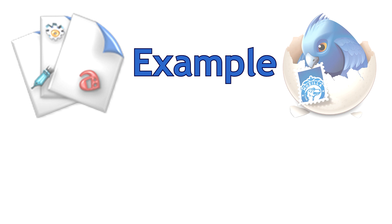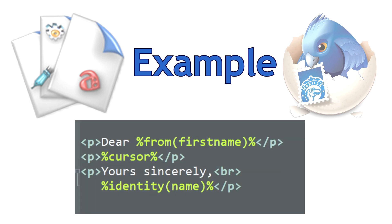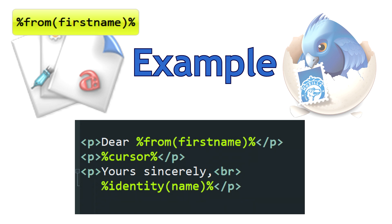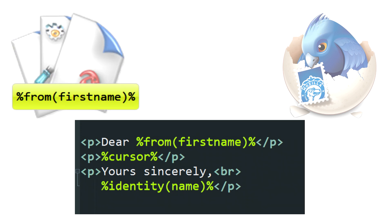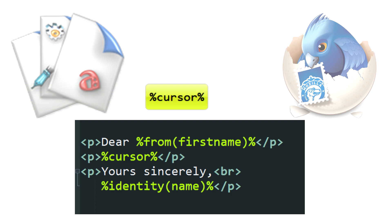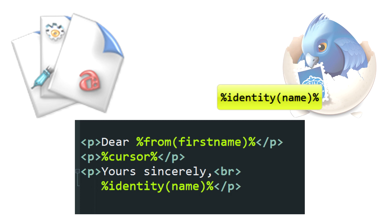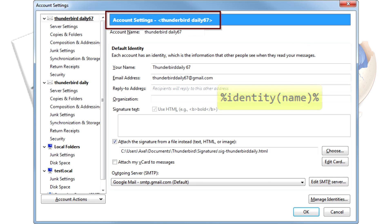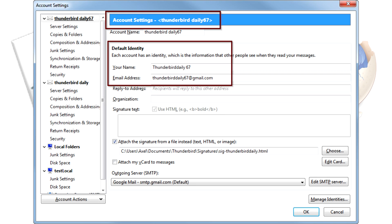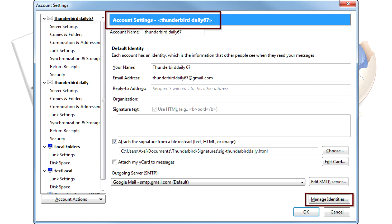Here is a simple example. Note that all Smart Template variables are surrounded with percent signs: Dear %FROM_FIRST_NAME%, %CURSOR%, Sincerely, %IDENTITY_NAME%. From First Name will extract the name from the sender's address, or from your address book if configured appropriately. The Cursor variable places the writing cursor at the designated position. The Identity variable uses your sender information set up in your account, and with it you can design a role-specific, flexible signature block with different identities, even from the same Thunderbird mailbox.